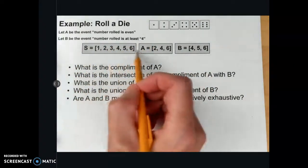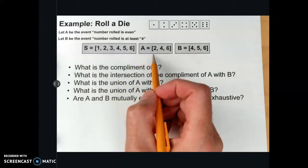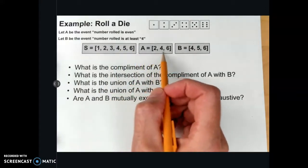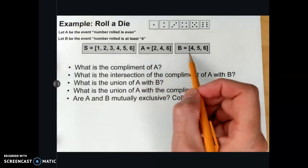So we have our sample space: 1, 2, 3, 4, 5, 6. Event A would be 2, 4, 6, and event B would be 4, 5, and 6.